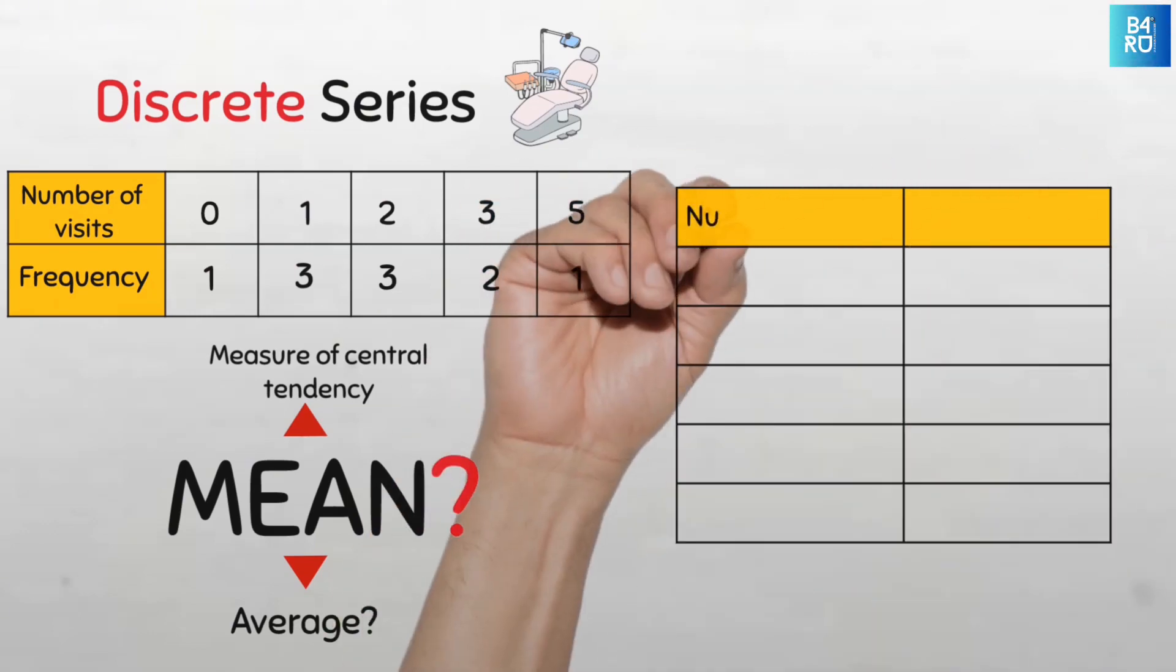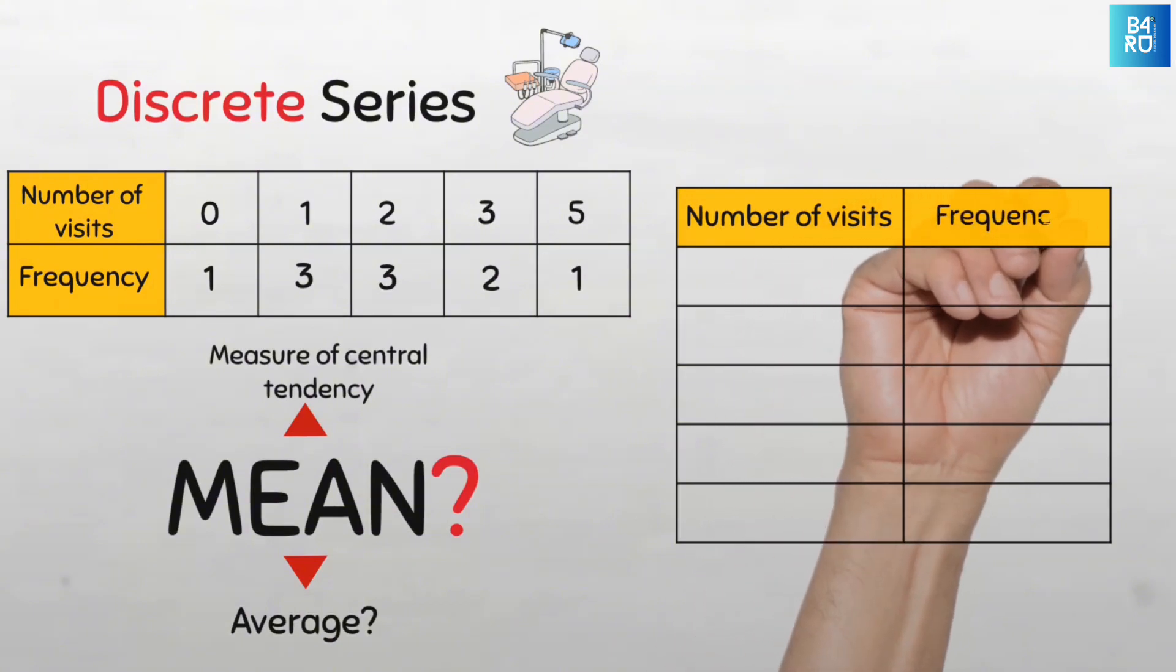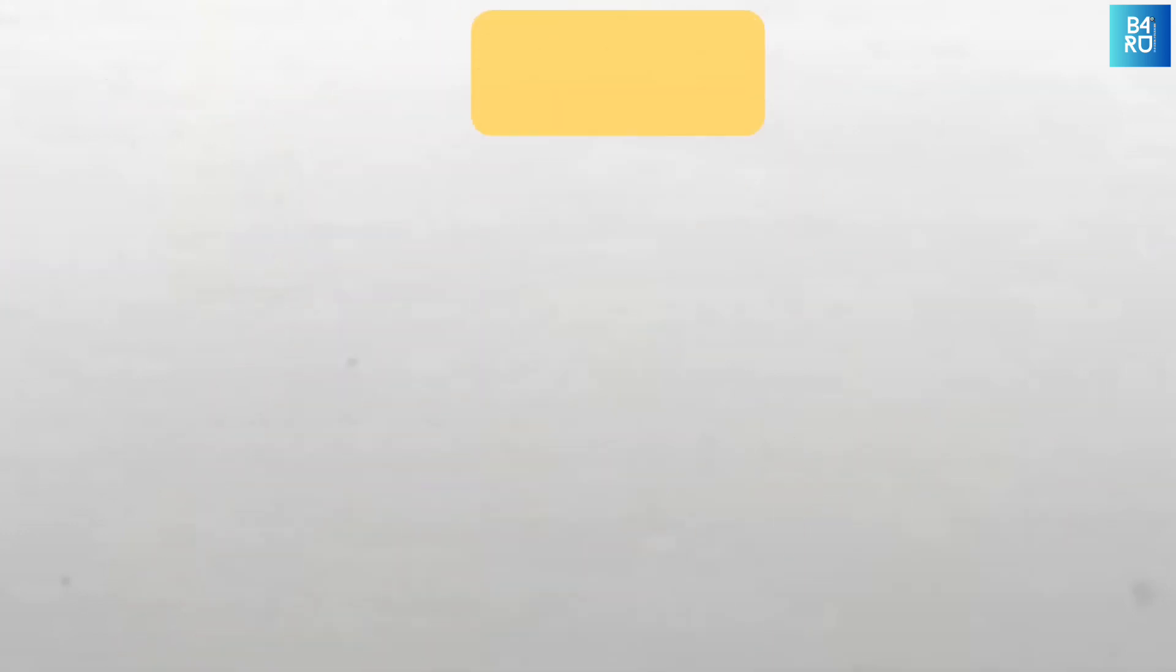So let's put the number of visits here and the frequency here, and then we have all the data arranged neatly in a vertical manner like so.